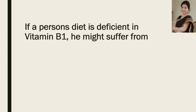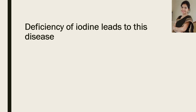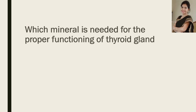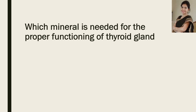Now the next question: if a person's diet is deficient in vitamin B1, he might suffer from which disease? And your answer is beriberi. Now, deficiency of iodine leads to which disease? You have to name the disease. And the answer is goiter. Now, which mineral is needed for the proper functioning of the thyroid gland? The answer is iodine. Iodine is required for the formation of thyroxine, which is produced by the thyroid gland.